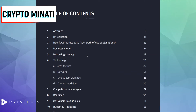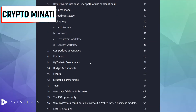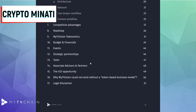Here is the table of contents of the white paper. First we have the abstract, introduction, how it works, news case, business model, marketing strategy, technology, and after that the roadmap, token economics, sales budget, and team strategy ICO opportunity.